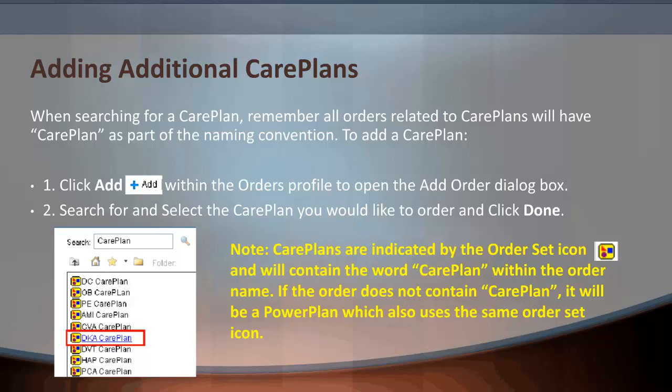When searching for a care plan, remember that all orders related to care plans will have the word 'care plan' as part of the naming convention. To add a care plan, click the plus Add button within the order's profile to open the Add Order dialog box. Search for and select the care plan you would like to order, then click Done. All care plans are indicated by the order set icon and will contain the word 'care plan' within the order name. If the order does not contain 'care plan' but has the order set icon, it will be a power plan or order set.